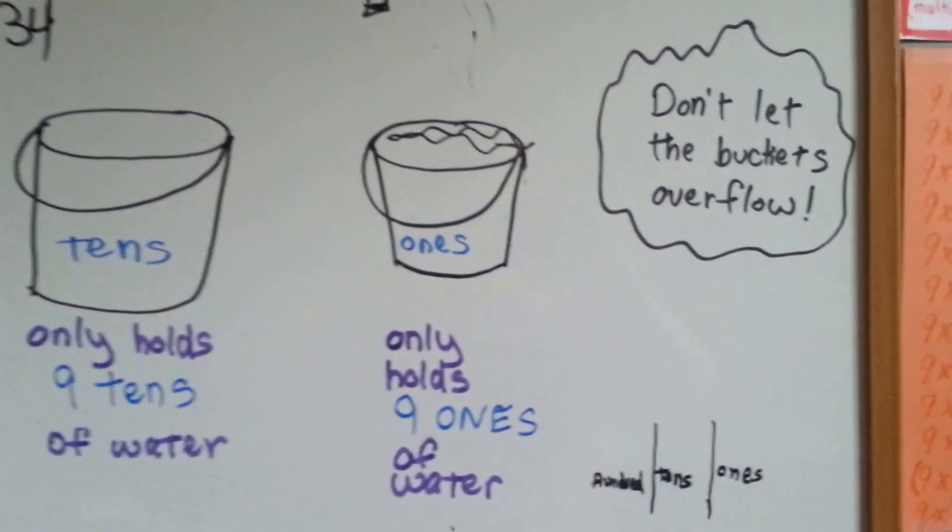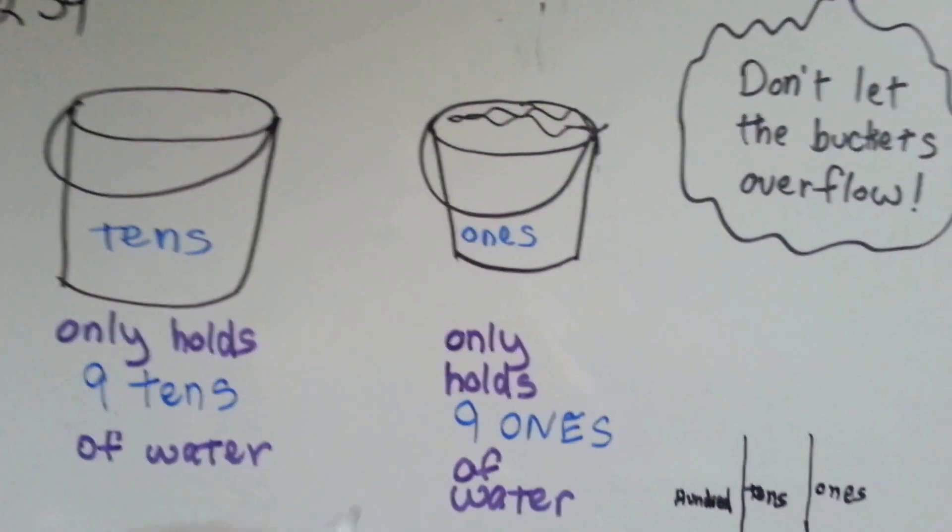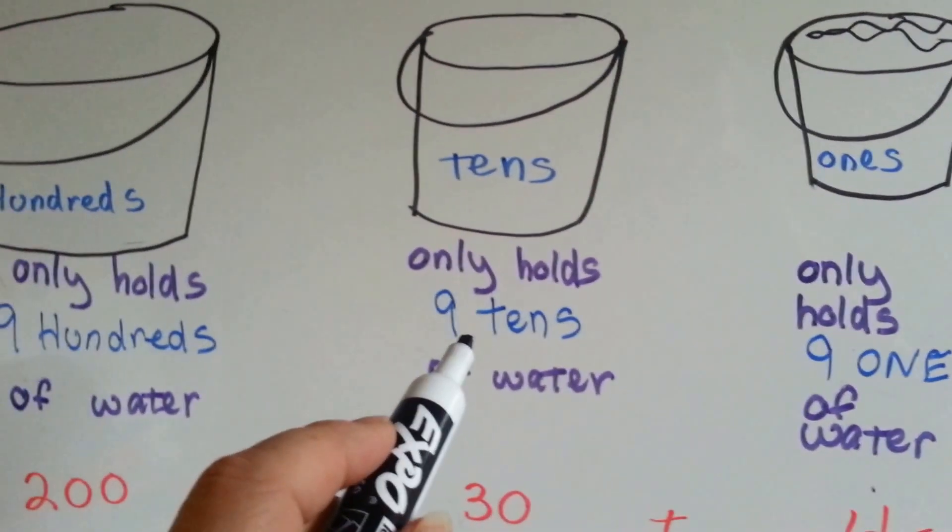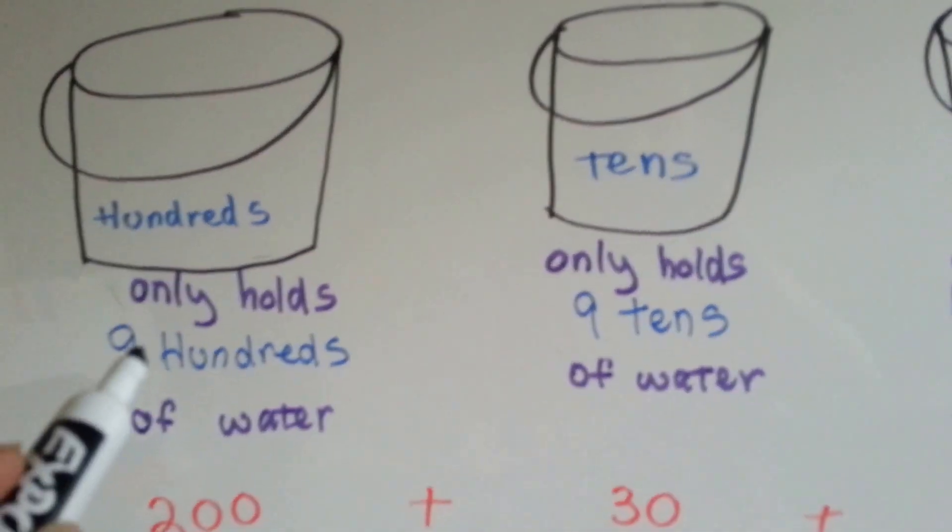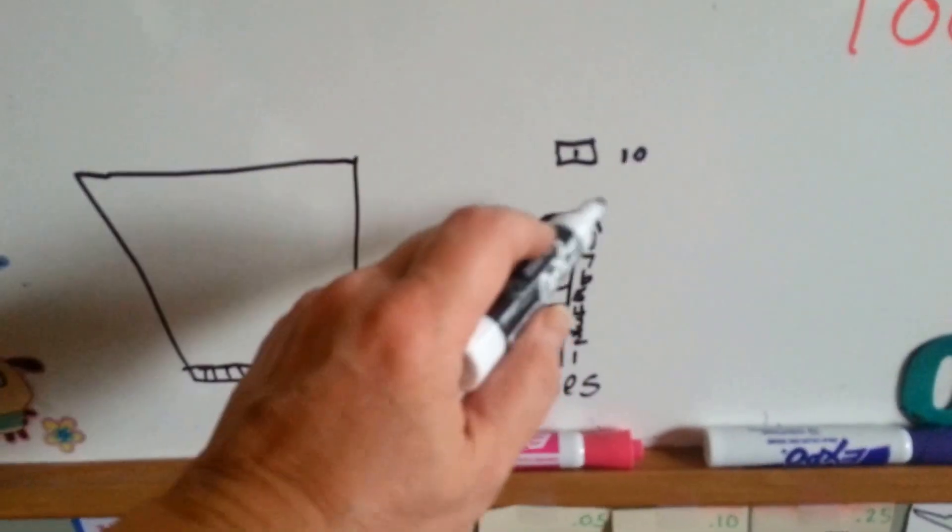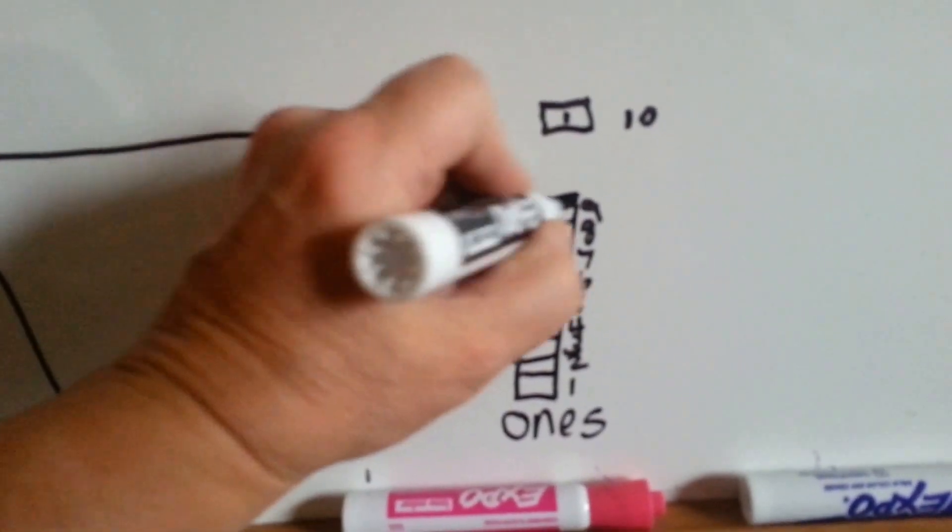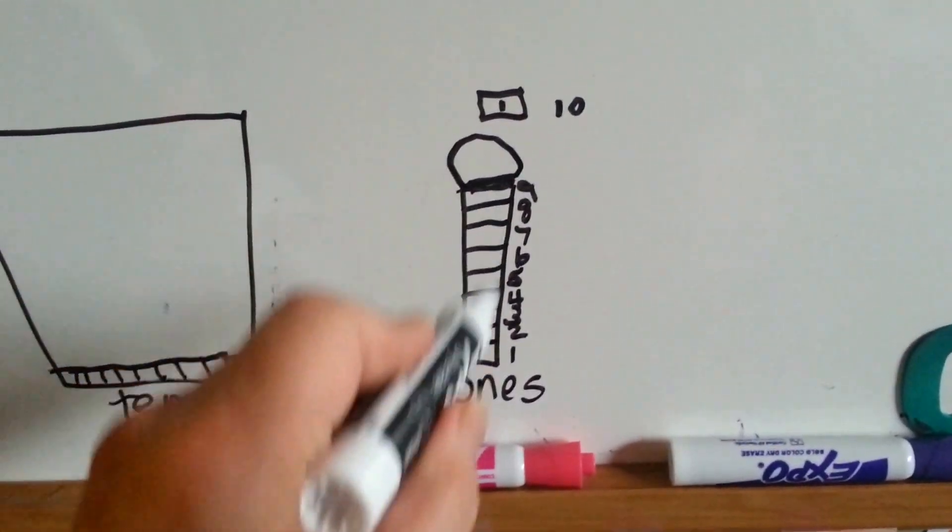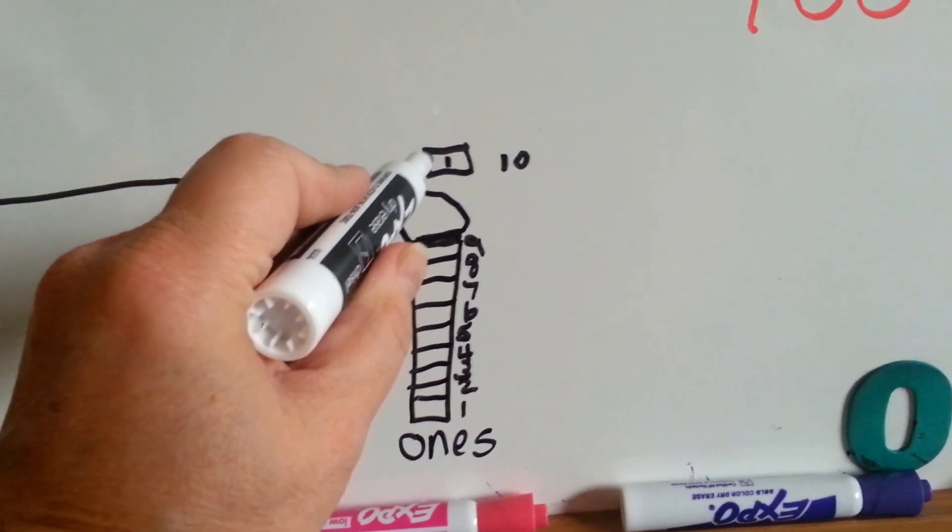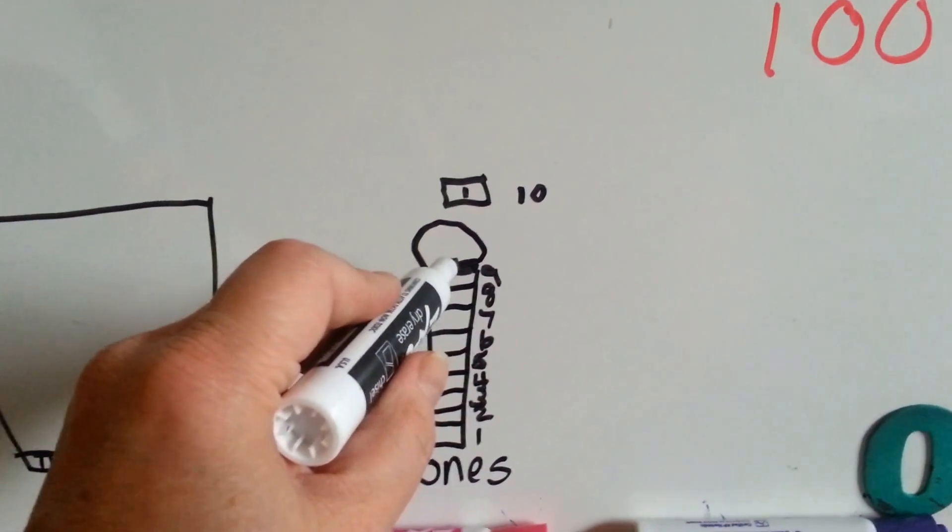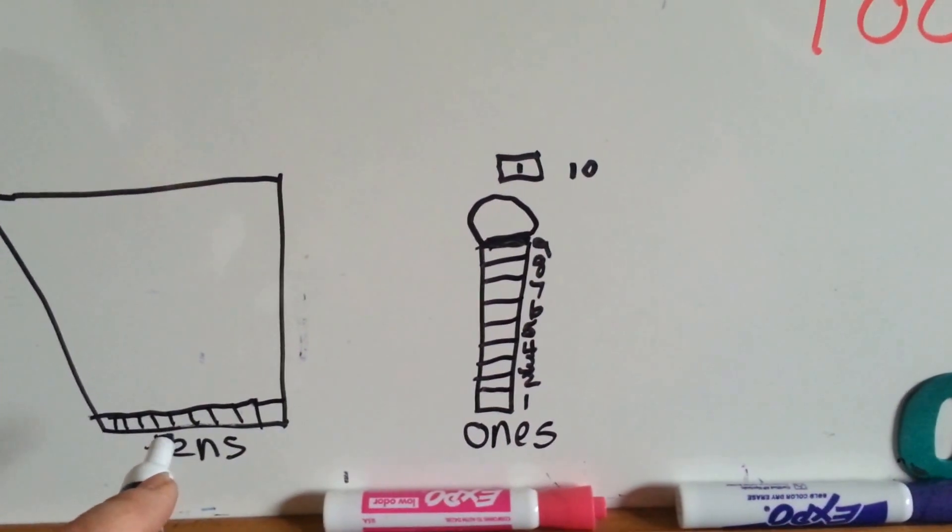So, think of it as buckets. You don't want the buckets to overflow. The ones bucket can hold 9 ones. The tens bucket can hold 9 tens. The hundreds bucket can hold 9 hundreds. If you add 1 more, look at this. What if the bucket was this tall, long, skinny bucket like this? And here's the handle. And it could hold 9 little 1 boxes. The minute you wanted to add 1 bucket, 1 cup more of water, which would be the 10th cup, it wouldn't be able to hold it. It would overflow.